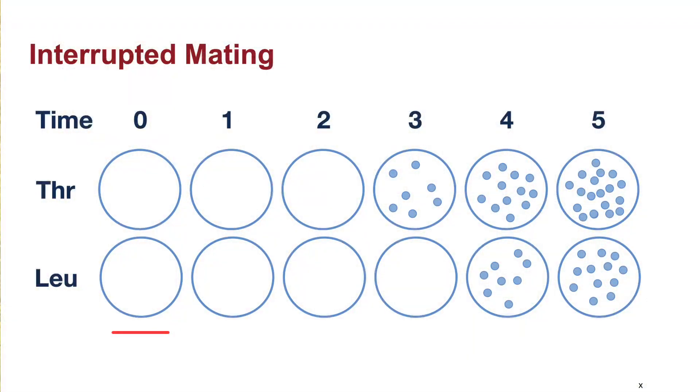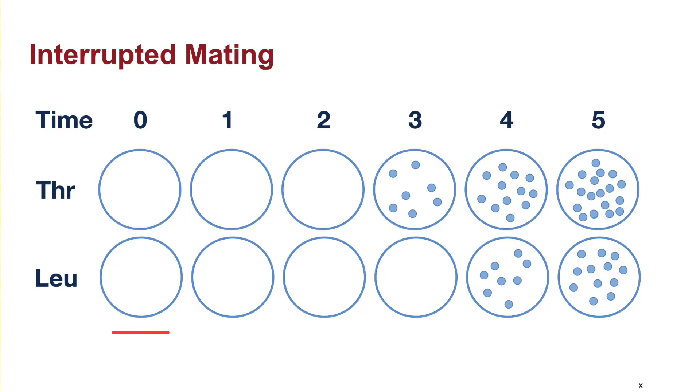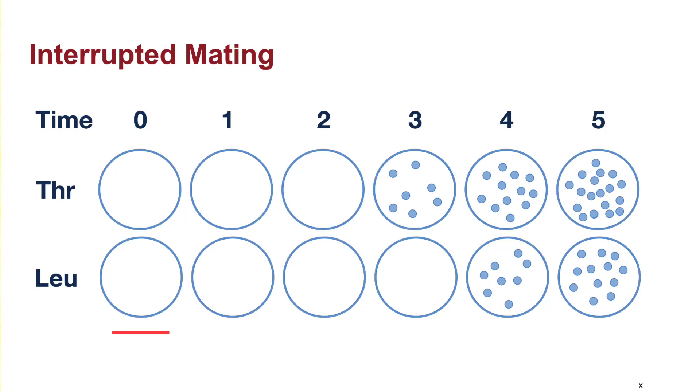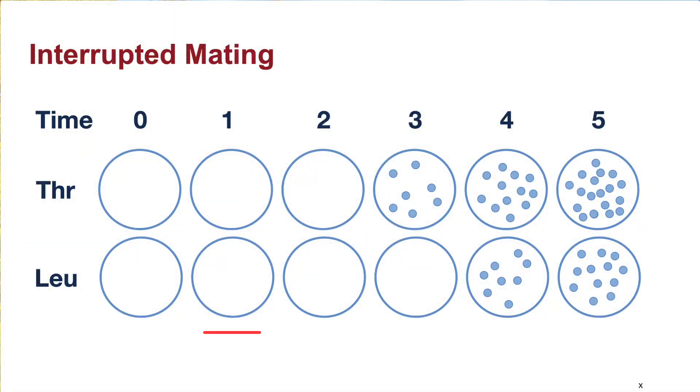The donor will not grow on the plates because of the antibiotic, so anything that grows will be the antibiotic-resistant recipient. However, the recipient won't grow unless it has acquired the genes from the donor for the missing leucine and threonine. At time zero the plates will show no colonies, as the recipient has not had a chance to acquire the genes it needs from the HFR donor. The single-stranded DNA is threaded over from the donor to the recipient at a set rate, so genes are passed over to the recipient in a consistent way. At the next time point, some DNA will have crossed over from the donor, and if it contains either of the genes missing from the recipient, the recipient will be able to grow on the media lacking leucine or threonine.